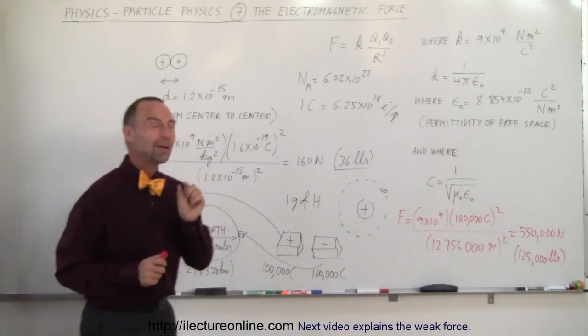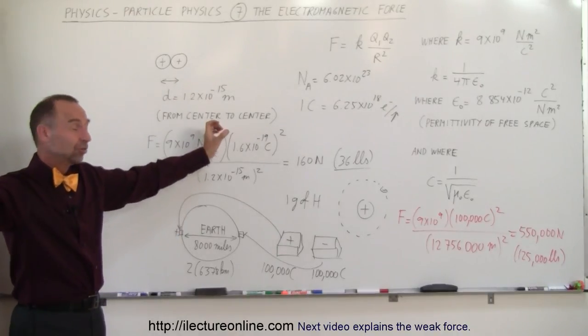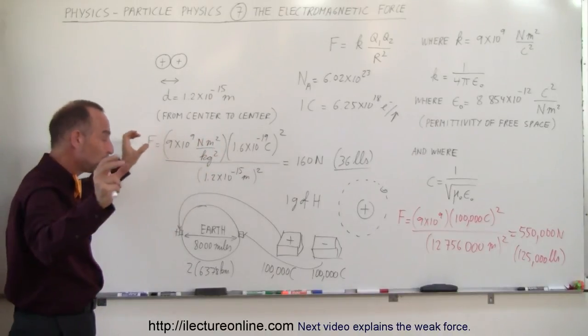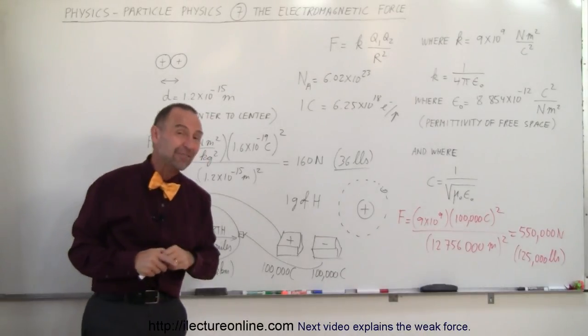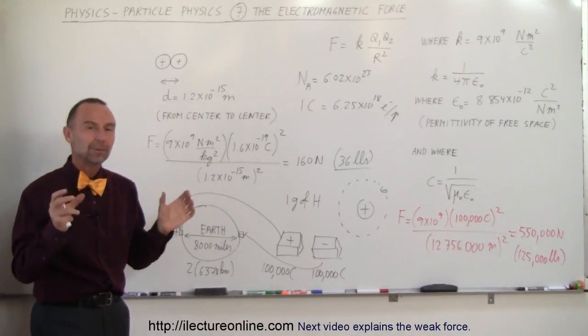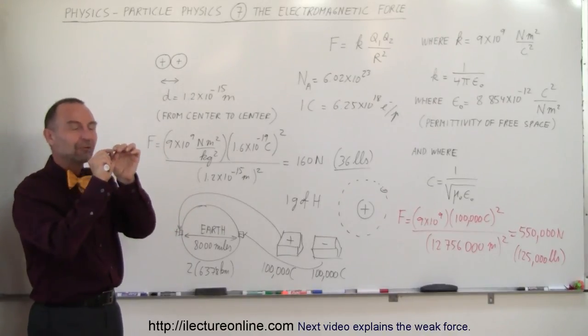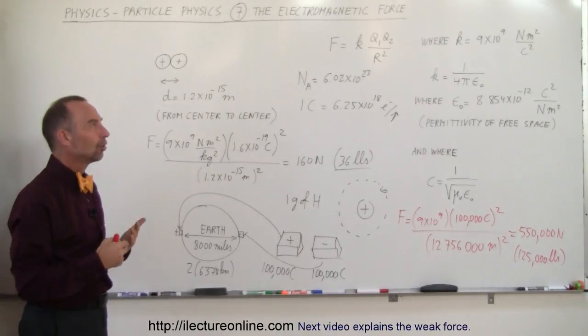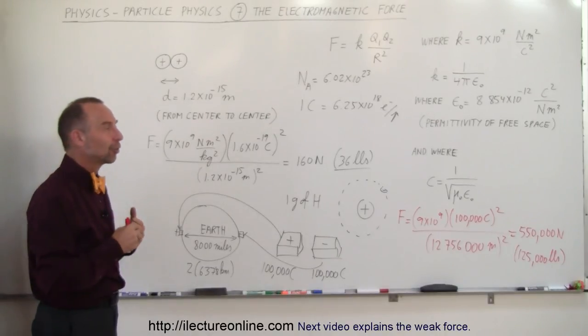Imagine, one gram of hydrogen, separate the electrons from the protons, separate the two boxes by 8,000 miles, more than 12,000 kilometers, and the force of attraction between them would be 125,000 pounds or a half a million newtons. An incredible amount of force for a small amount of charge. The charge you could put into a very small volume, yet the force of attraction would be absolutely enormous. That should give you an appreciation of the strength of the electromagnetic force.